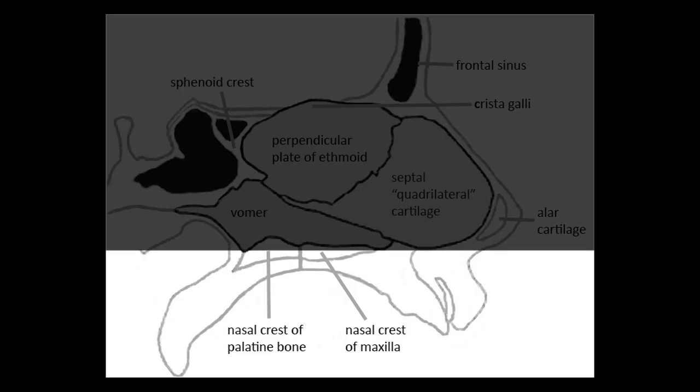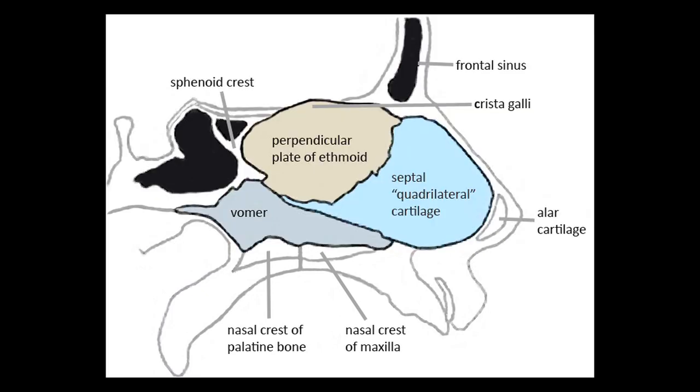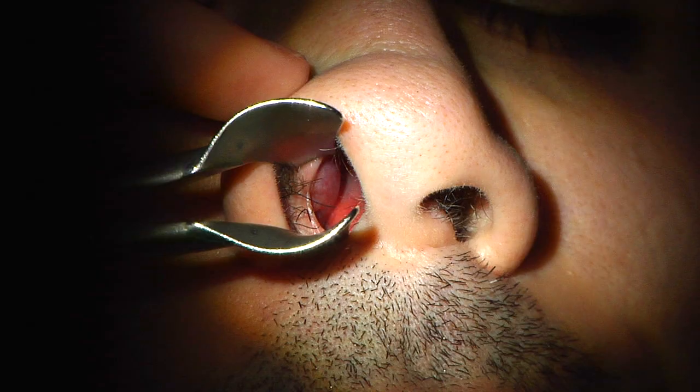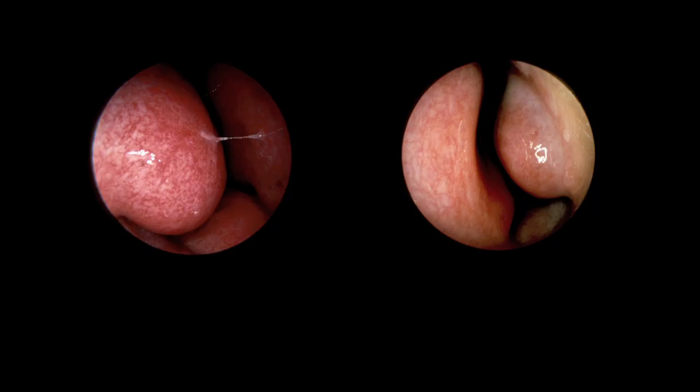Inferiorly, along the floor of the nose, which runs parallel to the roof of the mouth, one might see the maxillary crest, into which the quadrilateral cartilage sits. Lateral to the lower nasal septum are the inferior turbinates, which, when enlarged, may be mistaken for a nasal polyp.